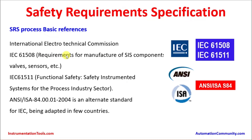IEC 61508 defines the requirements for manufacturers of SIS components such as valves and sensors. IEC 61511 covers safety instrumented systems for the process industry sector — specifically how they need to be installed, commissioned, validated, proof tested at regular intervals, and maintained. ISA/INC 84 is an equivalent standard to IEC 61511, adapted in countries such as the Americas.